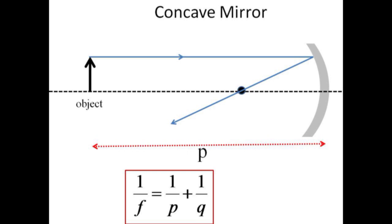A ray that emerges from the object parallel to the optical axis is reflected through the focal point. A ray that passes first through the focal point will be reflected back parallel to the optical axis. The two rays converge at the image location.